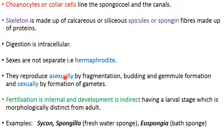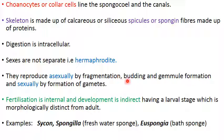Sponges reproduce both asexually and sexually. Asexual reproduction occurs by fragmentation — sponges have a very high power of regeneration, so even fragments develop into new sponges. They also reproduce by budding: a bud forms, detaches, and develops into a new sponge.